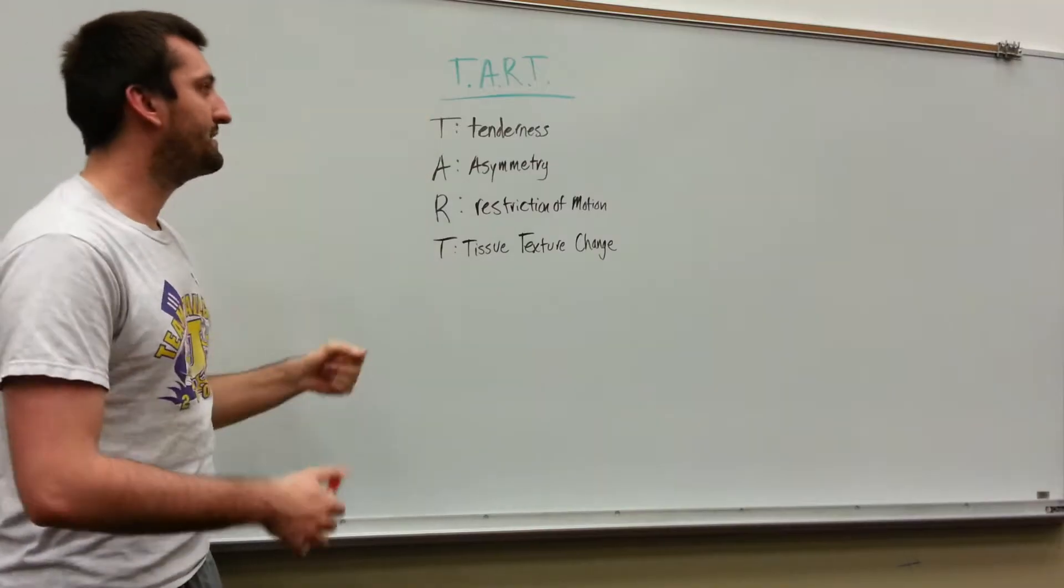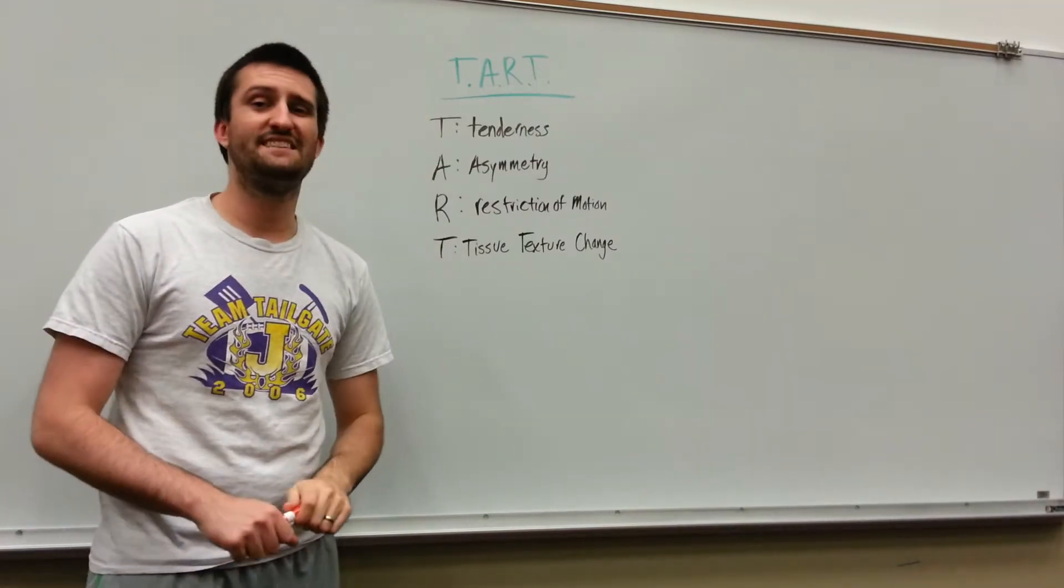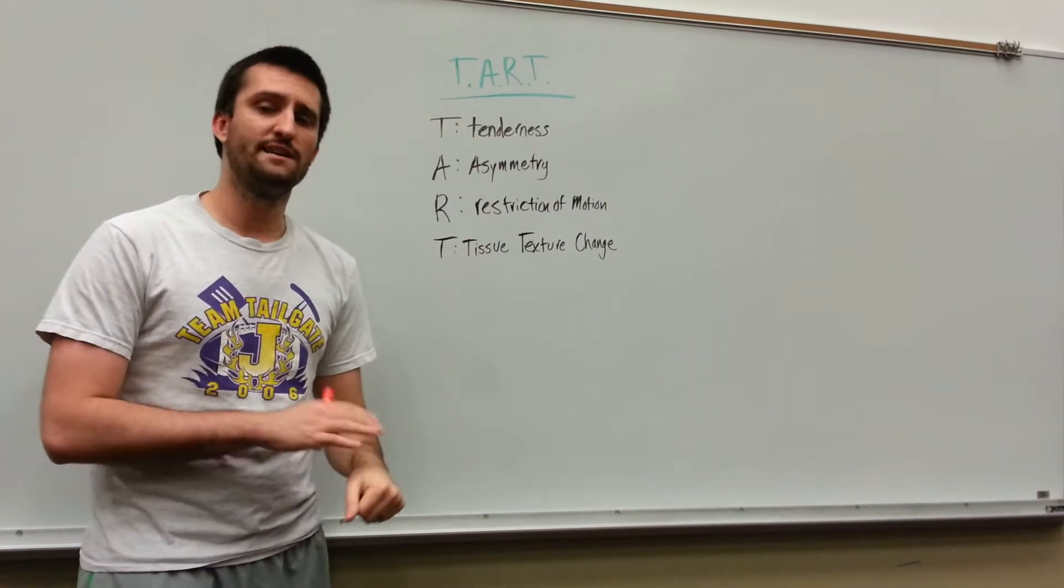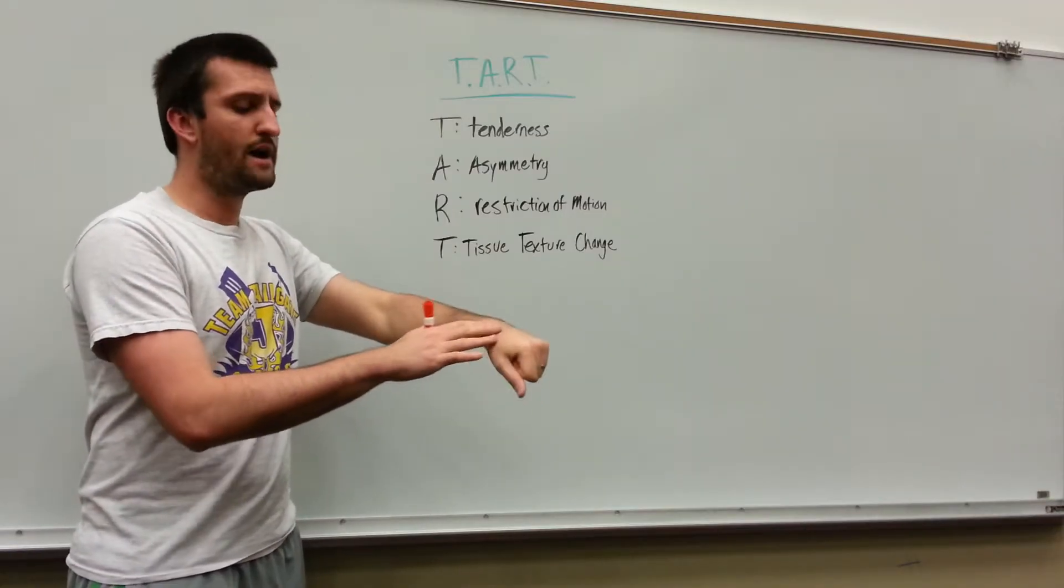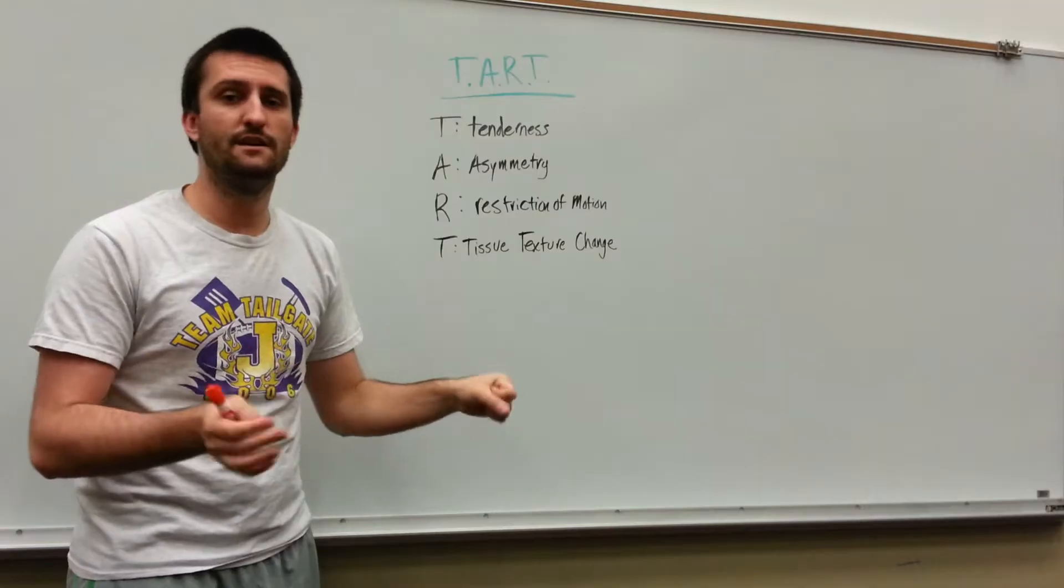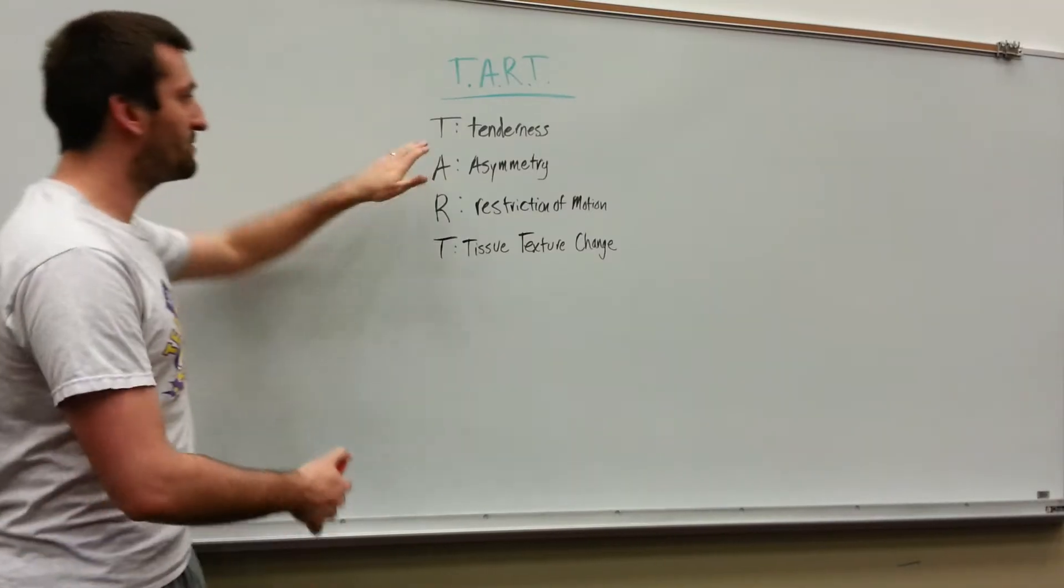So we've got the T for tenderness. Let's start with tenderness, also known as sensitivity. This is going to be point tenderness at a location. So I'm going to be palpating my own wrist. Oh, ouch, it hurts right there. It could be a somatic dysfunction. So then we've got the A.